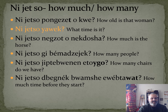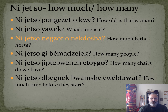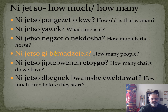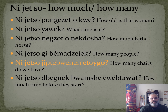Ni jetsu nuggers or or neck dosha means 'how much is the horse' or 'how much does it cost?' Ni jetsu gee them odds a joke means 'how many people?'